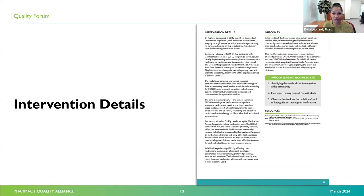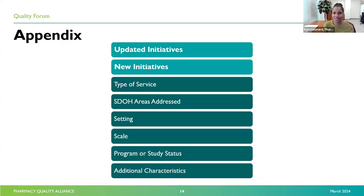Intervention details and outcomes are also reported for each initiative. On the second page, some initiatives also include lessons learned since implementation. If you're interested in an overview of characteristics about the initiatives featured, please feel free to browse our appendix at the end of the SDOH resource guide, as it includes categorizations of each initiative based on those areas.